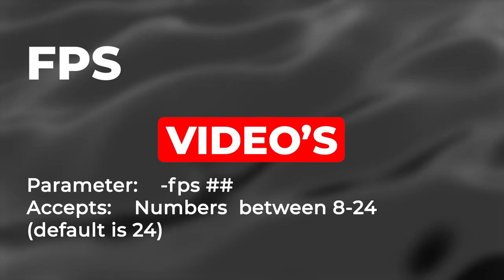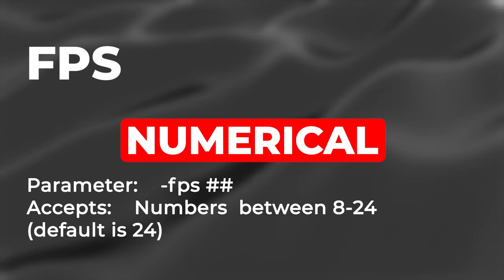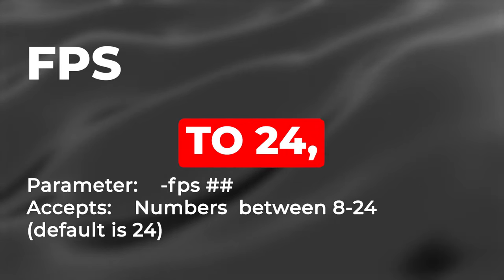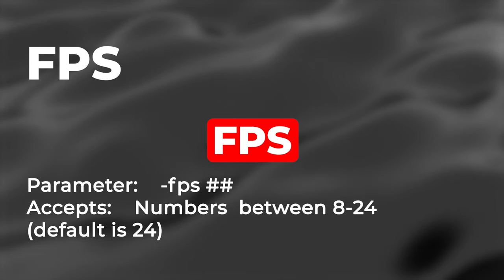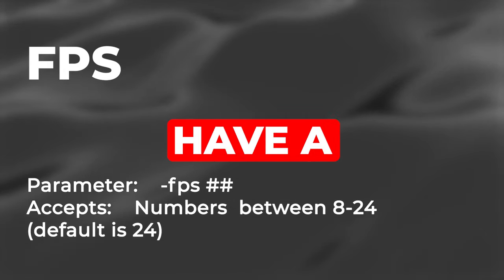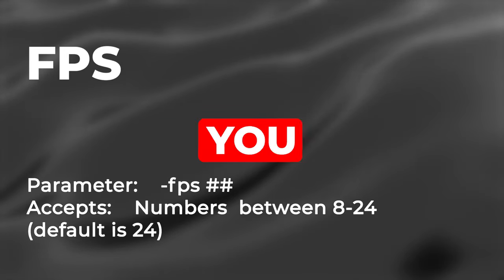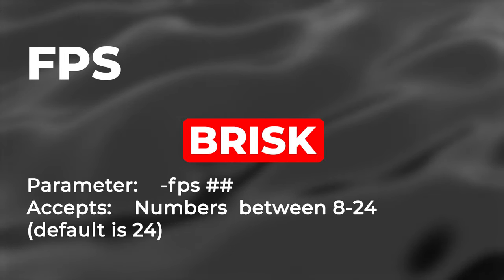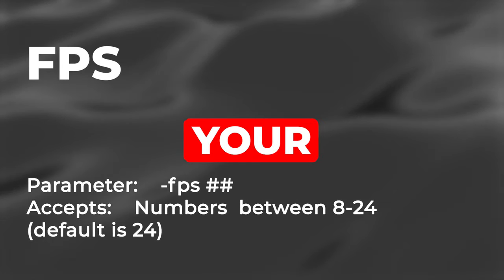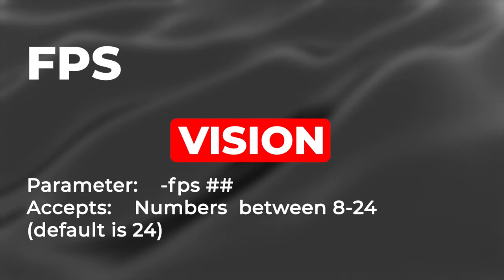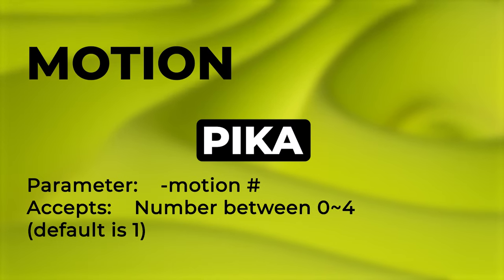You can control your video's pace with the FPS parameter. This parameter accepts numerical values between 8 and 24, with the default setting being 24 FPS. The frames per second you select will have a profound impact on the feel of your video — whether you desire a cinematic glide or a brisk narrative, this parameter lets you fine-tune your video's tempo with precision.